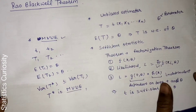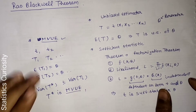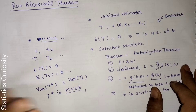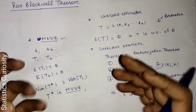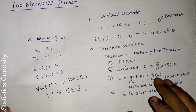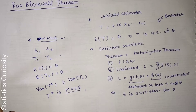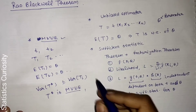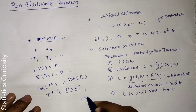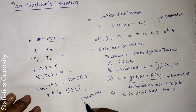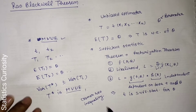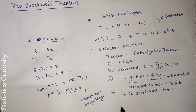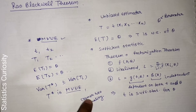Now we will start the Rao-Blackwell theorem. But first, let's understand why we need it. There is a theorem called the Cramer-Rao inequality, which also gives a minimum variance unbiased estimator, but it holds only under certain regularity conditions.